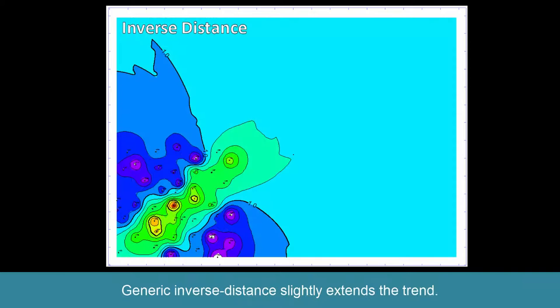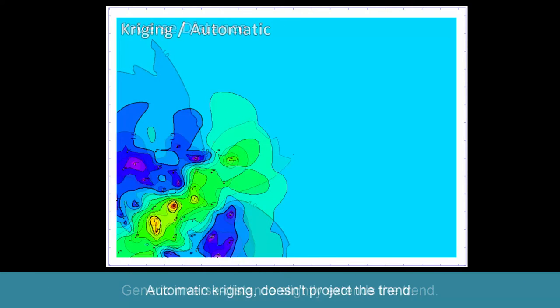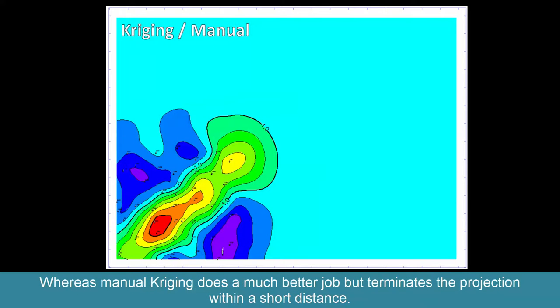Generic inverse distance slightly extends the trend. Automatic kriging doesn't project the trend, whereas manual kriging does a much better job but terminates the projection within a short distance.